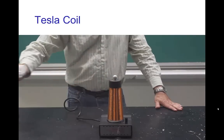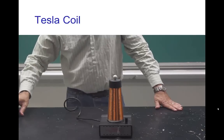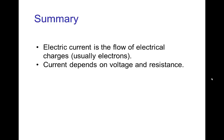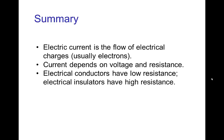You don't necessarily see the current in the air even when it's there. In summary, electric current is the flow of electrical charges, usually electrons because electrons move very easily, but in the example of the salt water it was actually ions of sodium and chlorine. Current depends on voltage and resistance. Electrical conductors have a low resistance and electrical insulators have a high resistance. Notice that we also have the concept of thermal conductors and thermal insulators — there's some connection, but really these are distinct concepts.